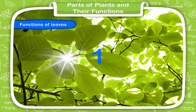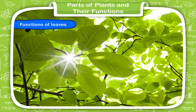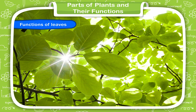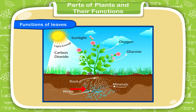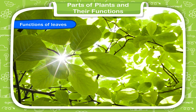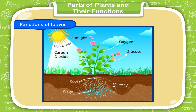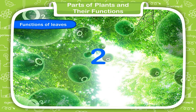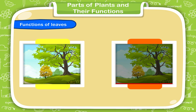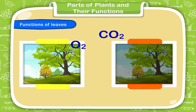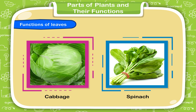Functions of Leaves. First, the leaf is called the food factory of the plant because green leaves make food with the help of carbon dioxide from air, water, sunlight, and chlorophyll. Chlorophyll is the green substance in leaves that traps sunlight. The process by which a plant makes food in the presence of sunlight is called photosynthesis. Second, while making food, the leaves give out oxygen, which human beings and animals breathe in to stay alive — this happens during the day. Third, leaves breathe in oxygen and breathe out carbon dioxide at night. Fourth, the leaves of some plants like cabbage and spinach store food in them.